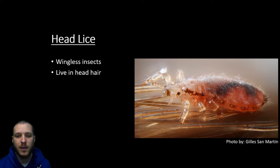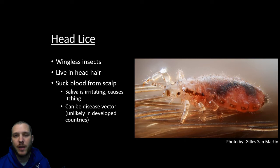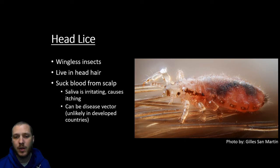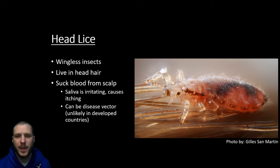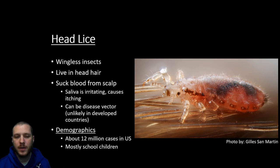Head lice are wingless insects that live within your hair. The lice grip on to hair strands and act as parasites, sucking blood from your scalp to lay their eggs. It's not so much the crawling around that causes itchiness — it's the saliva in the louse's mouth that irritates and causes a reaction on the scalp. Lice can technically be a disease vector, though we don't see this much in first-world countries.